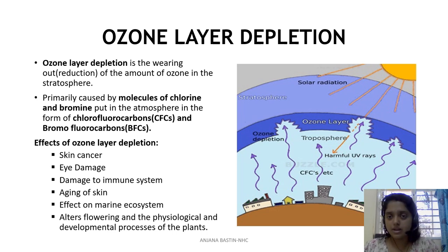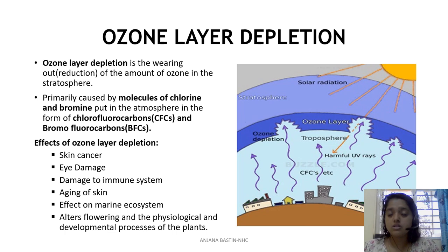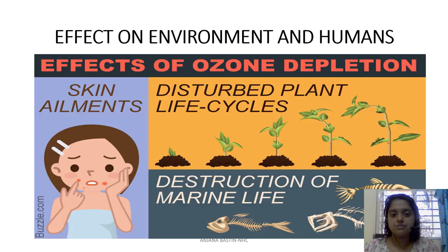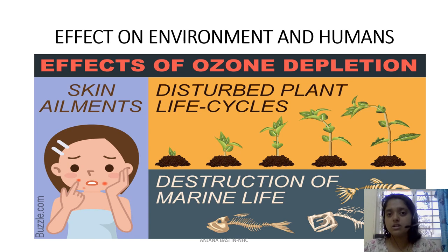Ozone layer depletion can be directly attributed to chlorine and bromine molecules released by chlorofluorocarbons and bromofluorocarbons. The general effects of ozone layer depletion include skin cancer, eye damage, damage to the immune system, aging of skin, effect on the marine ecosystem, and effects on plants — in terms of flowering and physiological development. Plants might die out without completing their entire life cycle. Skin diseases and eye damage are the most common effects we find.